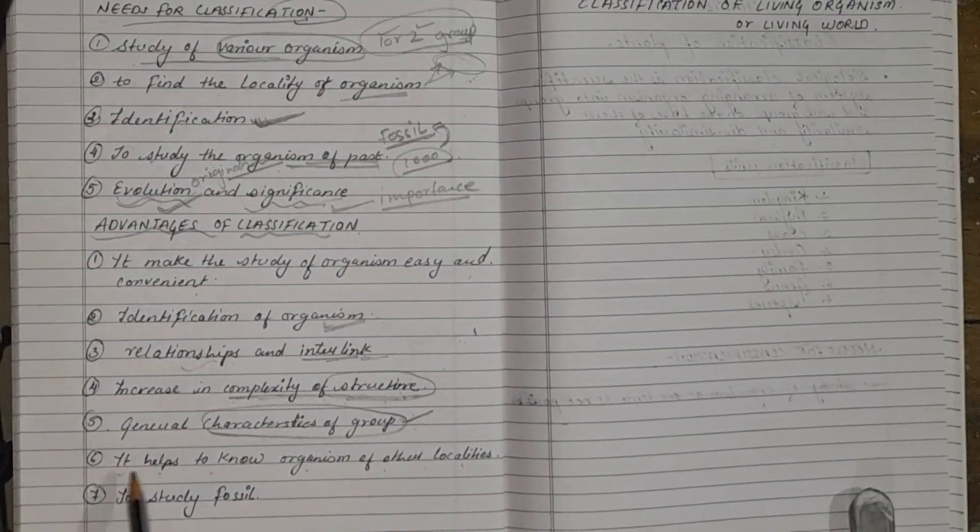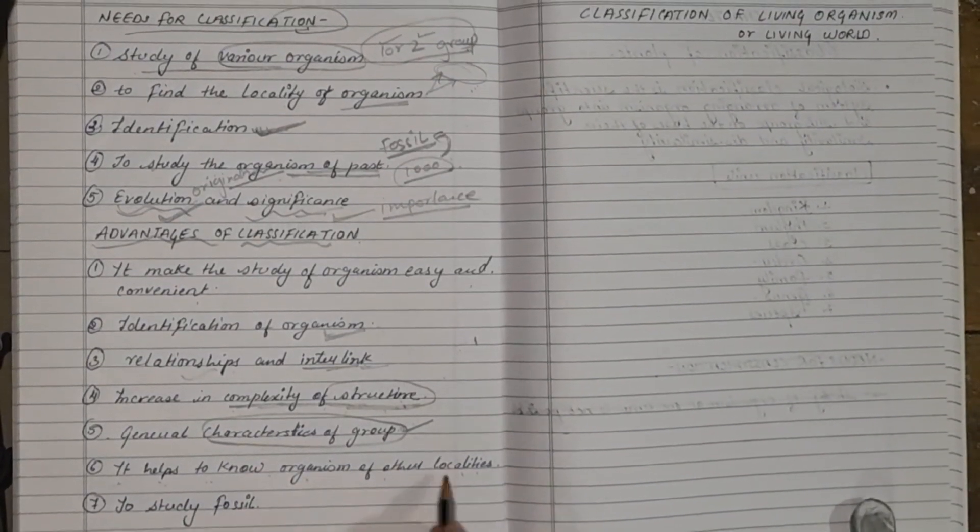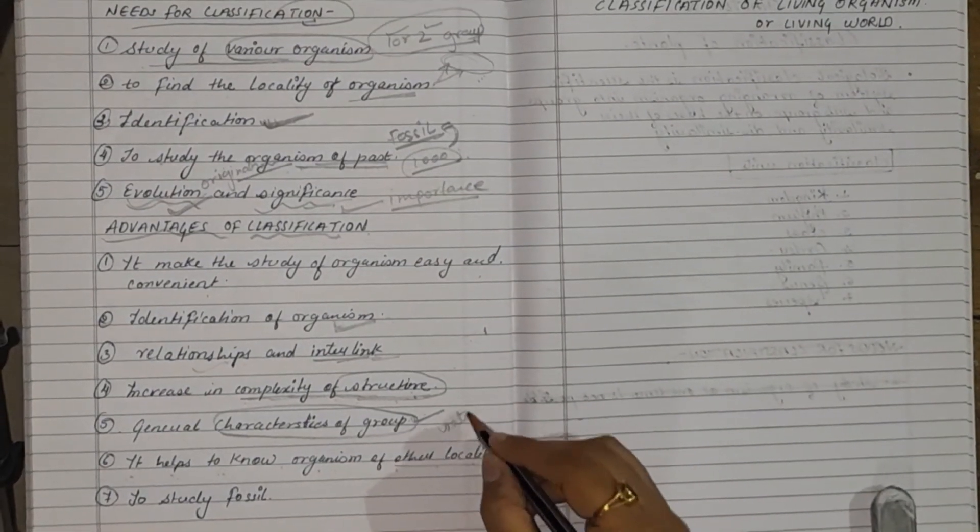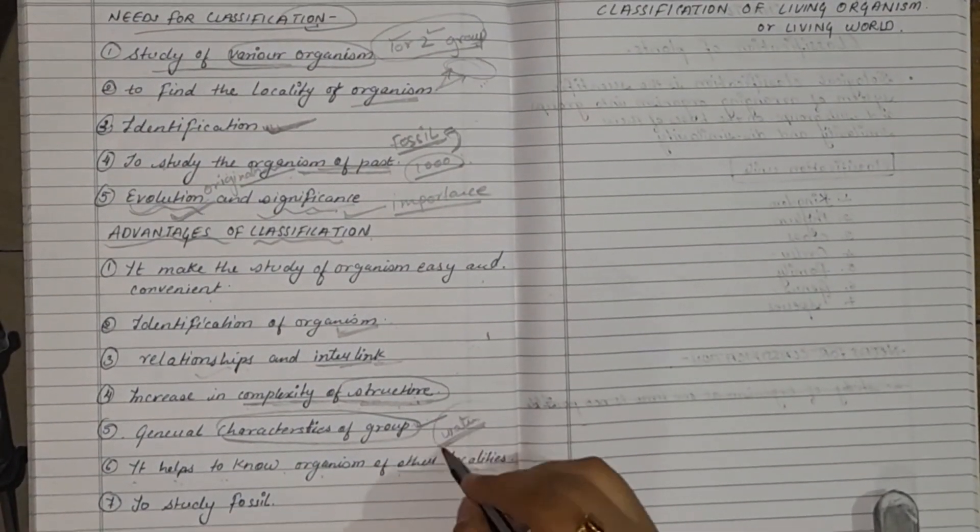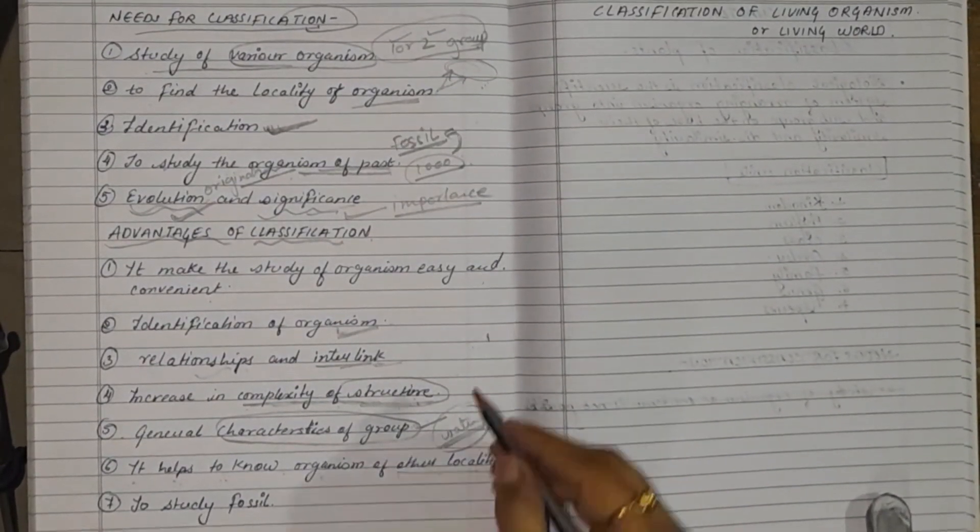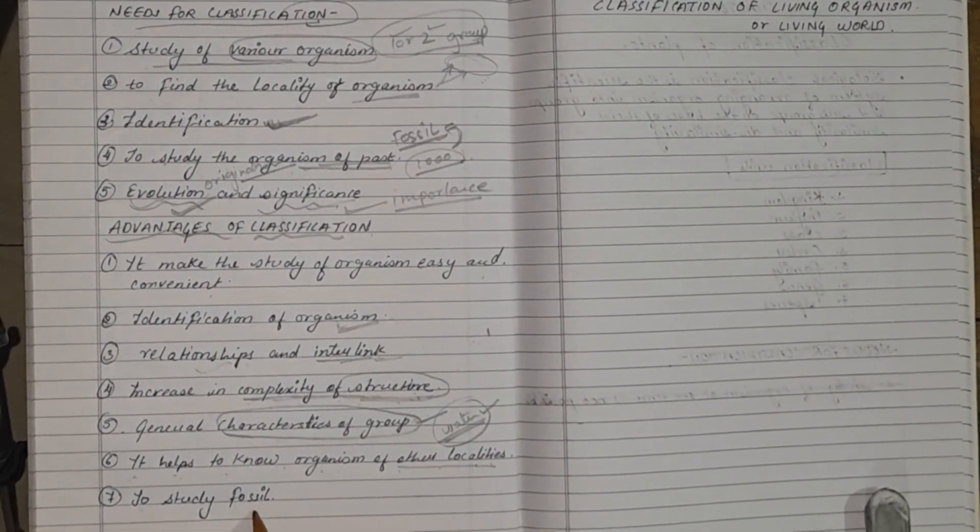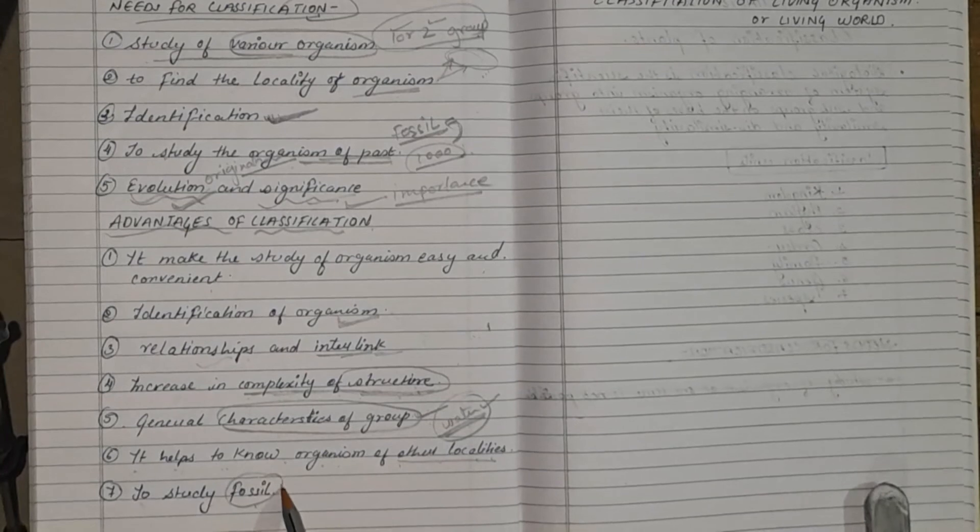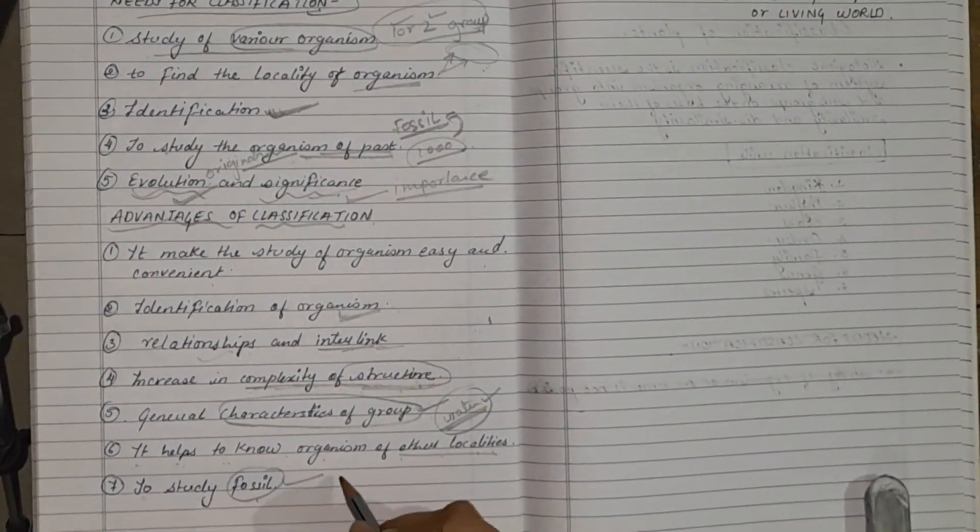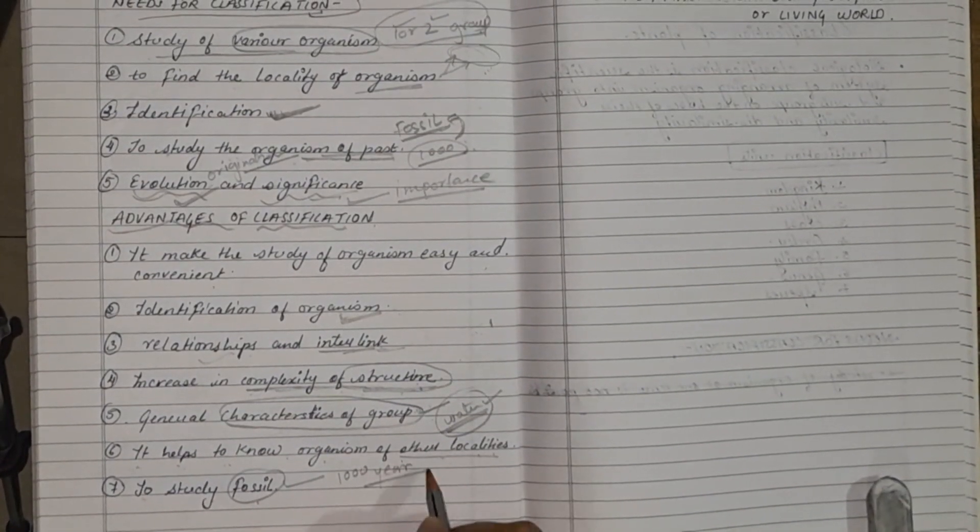The next point is it helps us to know organism of other localities. Other localities means if the organism is living in water, we will be able to know about all the water organism or we can say all the organism which live in aquatic habitat. Next is to study fossils. Already I have told you the meaning of fossils. What are fossils? Fossils are the animals or the plants which live thousand or more than thousand years ago on the earth.